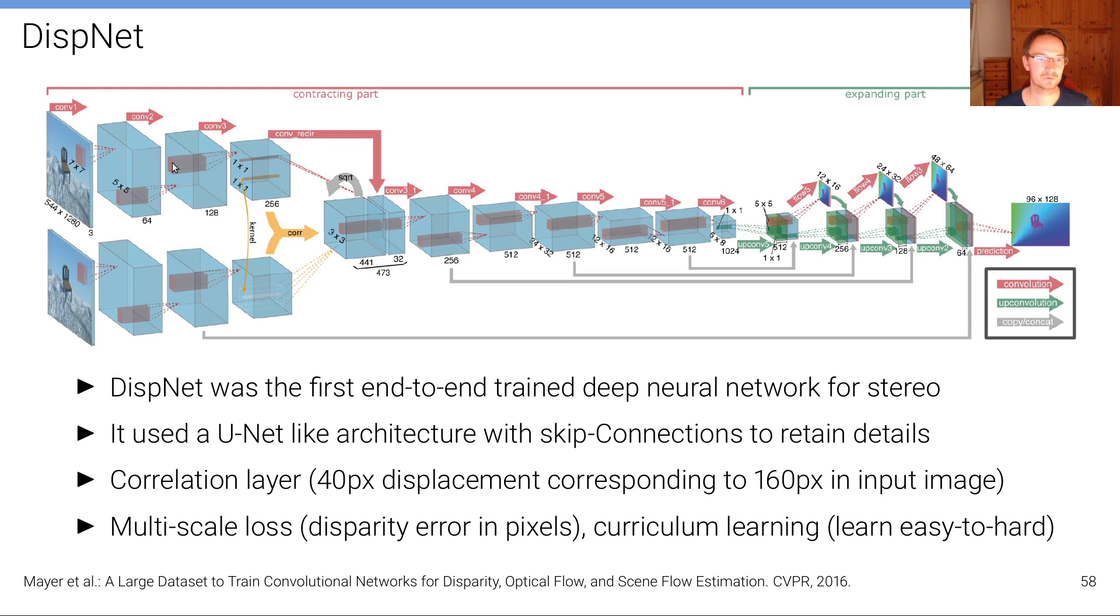So we're having, if you will, a Siamese network here, and then we're doing this correlation layer here that tries to now combine these two, and then from there on, we have just a single branch and not two branches anymore. So this is incorporating some of these basic ideas of traditional stereo matching.